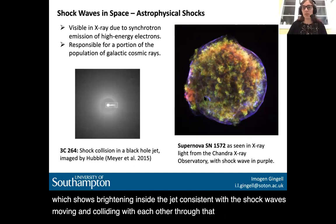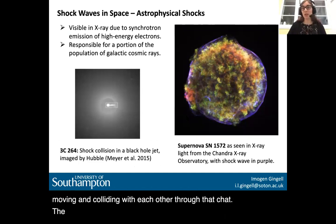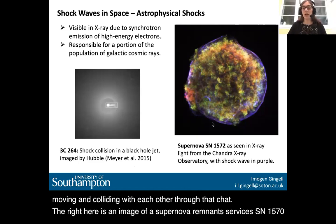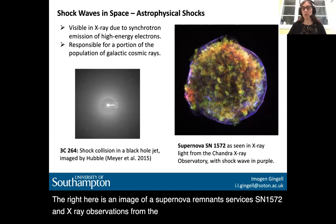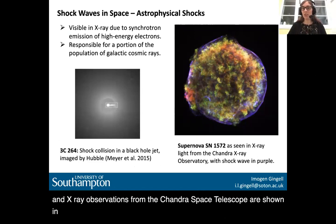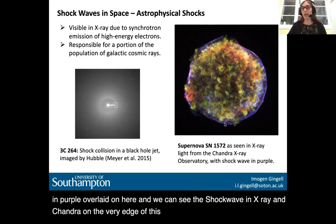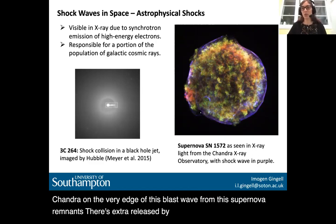On the right is an image of a supernova remnant — SN1572. X-ray observations from the Chandra Space Telescope are shown in purple overlaid on the image. We can see the very edge of this blast wave from the supernova remnant, and those X-rays are released by synchrotron radiation of high-energy electrons accelerated by that shockwave.